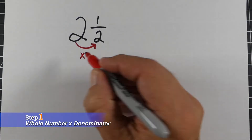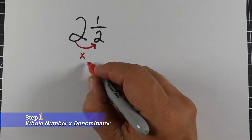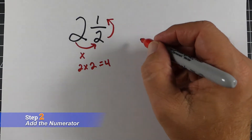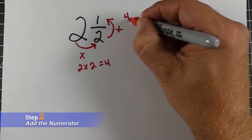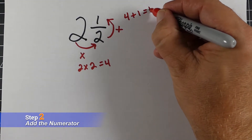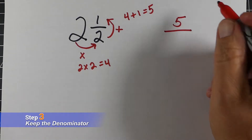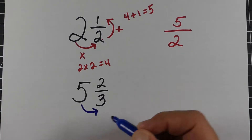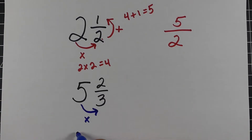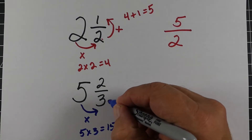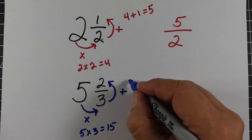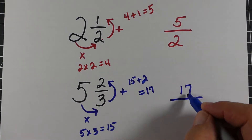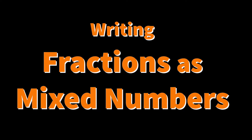That's not always the quickest way, so here's what a lot of people do: take the whole number times the denominator — two times two equals four — then add that to whatever's in the numerator, which is one. Four plus one equals five, so we get five over two. For five and two-thirds: five times three is 15, add that to the two to get 17, and we keep the denominator three, so we have 17-thirds.